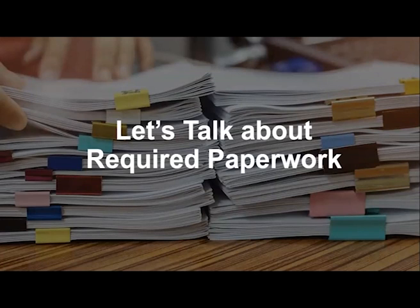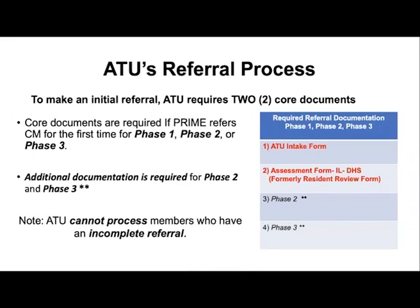Let's talk about the documentation needed to initiate a referral. For phase one, phase two, or phase three, you need to provide two core documents: the UIC Assistive Technology Unit intake form, and the assessment form formally known as the resident review form. Additional documentation is required for phase two and phase three referrals. We cannot process any referral with an incomplete packet — we need all required documentation in order to process the referral.